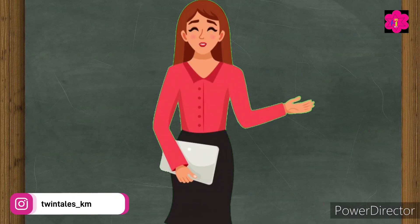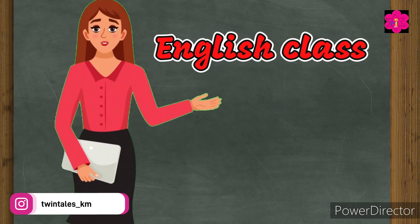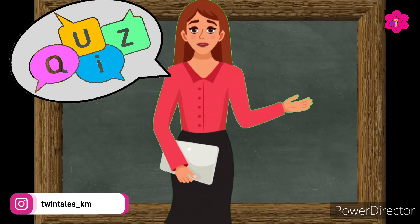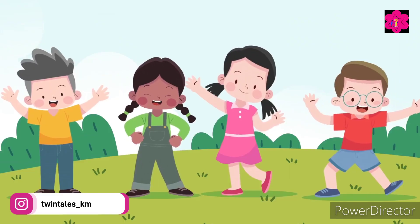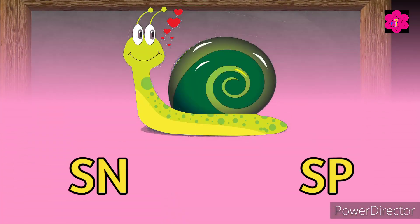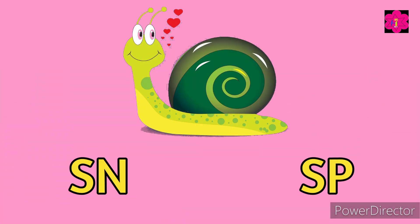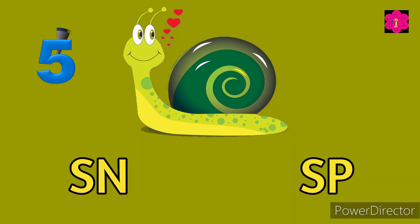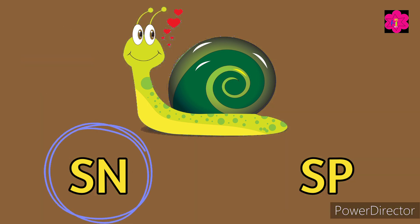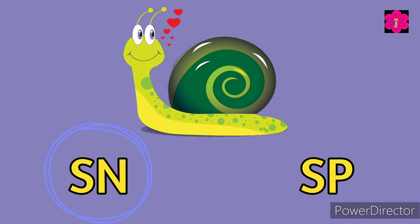Hello kids, welcome back to English class. This is the quiz video — are you ready for the quiz? Let's begin. Guess the beginning blend: SN or SP? Correct! SN — snail.